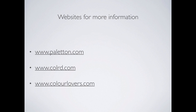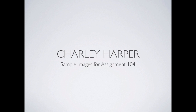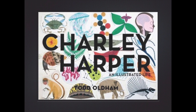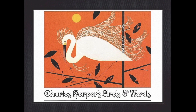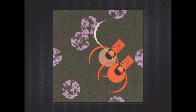Some websites for more information about color theory: Paletton is something we'll use today, and Colrd is also something we'll use today. Color Lovers used to be really good but has fallen off a bit. Now let's talk about Charlie Harper and give you an example. Charlie Harper was an artist in the 1950s who did these very iconic graphic pieces.